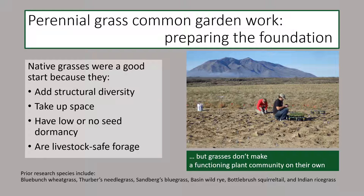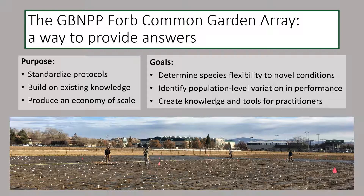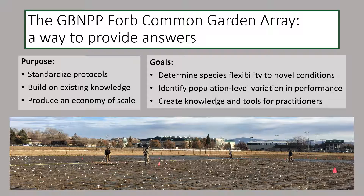But unfortunately grasses alone do not make a functioning plant community. So the Great Basin Native Plant Project has turned its efforts more toward working with forbs, and in 2019 we began the adventure of installing a large-scale forb common garden study. This will allow us to use knowledge and resources from past experiments to create a standardized protocol that will streamline common garden research for a variety of forbs, with the goal of determining species-level flexibility, identifying population-level variation in performance, and creating knowledge and tools for practitioners performing restoration on the ground.